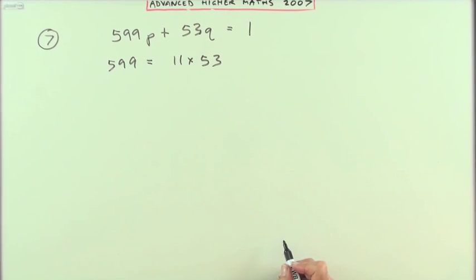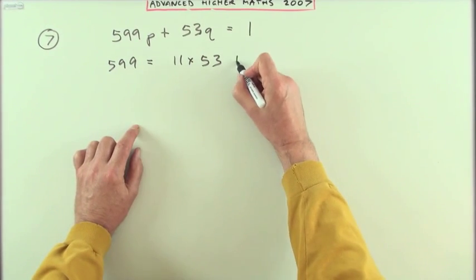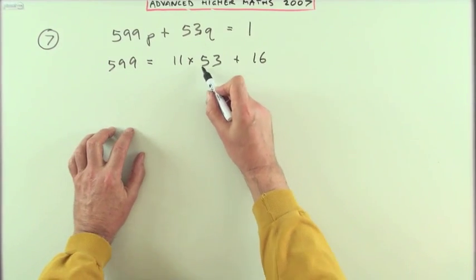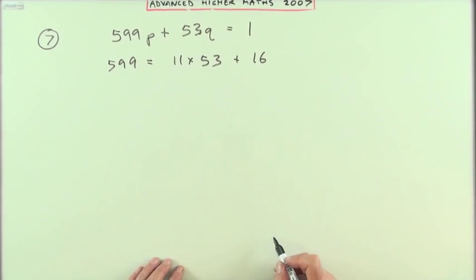11 of them, and that would leave 16. 11 times it is, remember you add the digits into the number 11 times it, would be 583 plus 16.